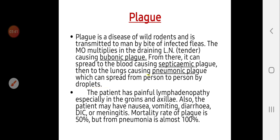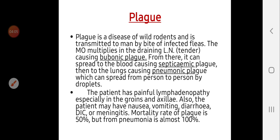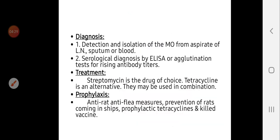If Yersinia pestis reaches the lung and causes pneumonic plague, the mortality rate is 100%. The patient first presents with lymphadenopathy mainly in the axillary region and groin. When the microorganism passes to the blood and lymph nodes, the patient will have nausea, vomiting, diarrhea, disseminated intravascular coagulation, or meningitis. The overall mortality rate of plague is 50%, but pneumonic plague carries 100% mortality.